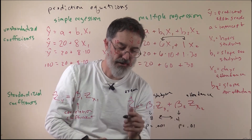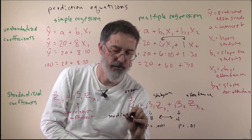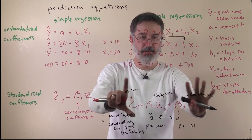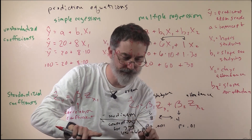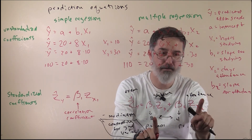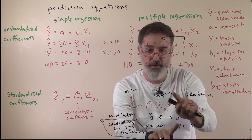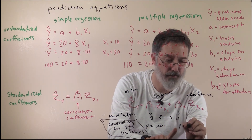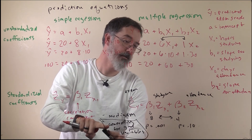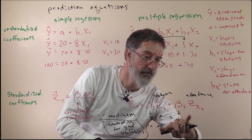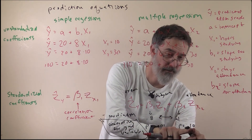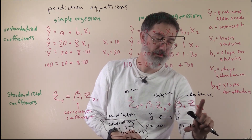Both controlling for third variables and mediation occur in multiple regression. For controlling for a third variable: studying predicts exam grade controlling for attendance because it is significant, and attendance predicts exam grade controlling for studying because it is significant. If attendance were not significant, attendance would not predict exam grade controlling for studying. That is how we use multiple regression to control for third variables — if a predictor is still significant when the other variable is in the equation, that relationship holds; if it becomes non-significant, that relationship has gone away.